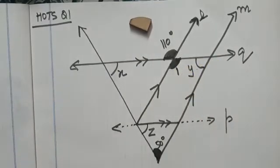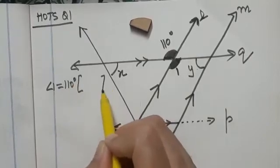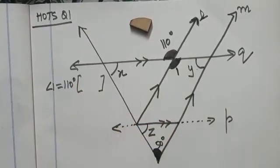Angle 1 will be 110 degrees. So you write down the reason: vertically opposite angles.